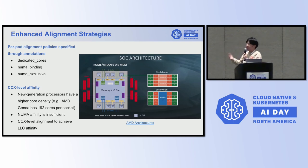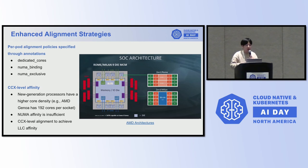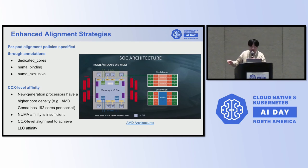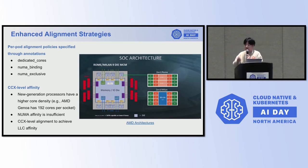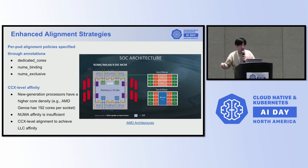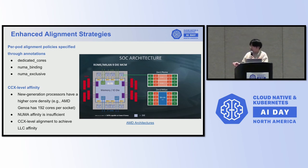For some latency-sensitive workloads, such as inference services for advertisement, search, and recommendation, NUMA exclusive can effectively avoid memory bandwidth contention. As we can see from this picture, increasing core density on a single CPU is a trend. For example, AMD Genoa features up to 192 cores on a single socket. In this case, NUMA node affinity is insufficient to meet the performance demands of LLM workloads. Therefore, Catalyst implements CCX-level alignment to achieve L3 cache affinity.